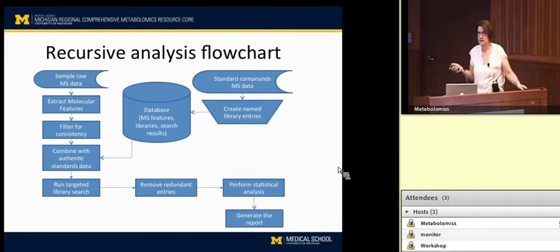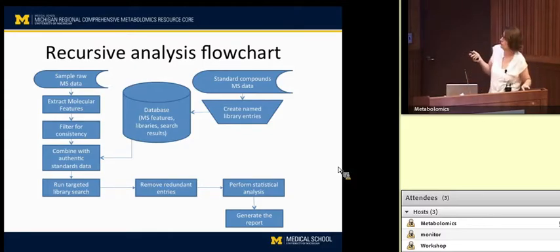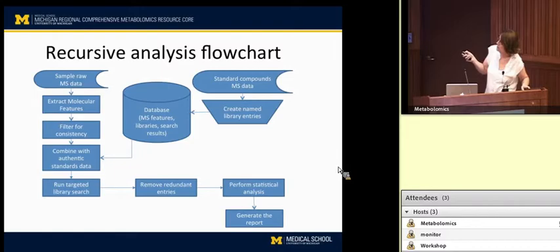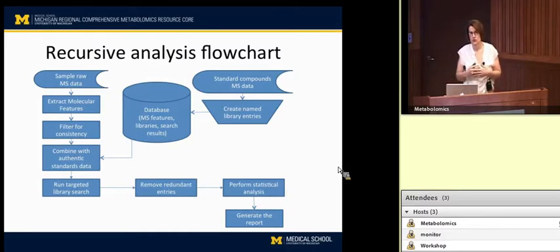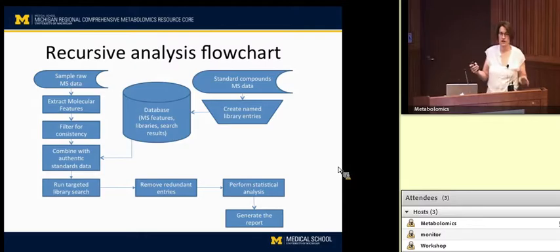We may be starting with as many as 6,000 features and trying to reduce that down to a couple to 3,000 to deal with. In between the filtering step, we create an on-the-fly library for that analysis, which includes all the features after reduction that have been detected in all the samples — kind of like a library just for that study.